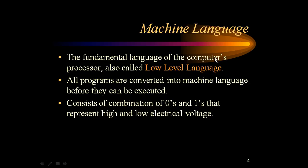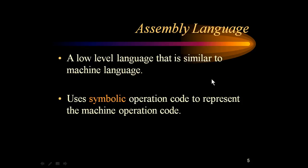Machine language is the fundamental language of the computer processor, also called lower-level language. All programs are converted into machine language — this is very important. Every program, whether C, C++, Java, C#, any language, has to be compiled and converted into machine language before it can be executed. It consists of combinations of zeros and ones representing high and low electrical voltages.